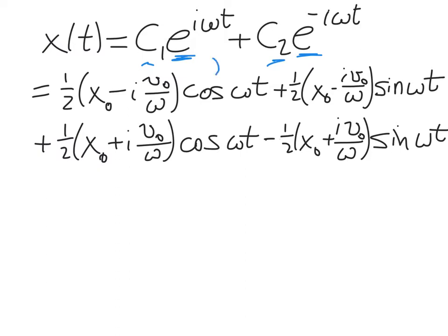Recall that e^(iωt) = cos(ωt) + i·sin(ωt). So c1 times e^(iωt) forms the first line, and c2 times (cos(ωt) − i·sin(ωt)) forms the second line. We can see nice cancellations: this term cancels with that term, and a few other cancellations occur as well.